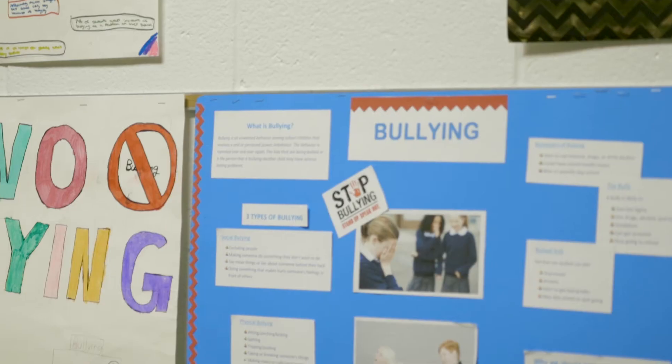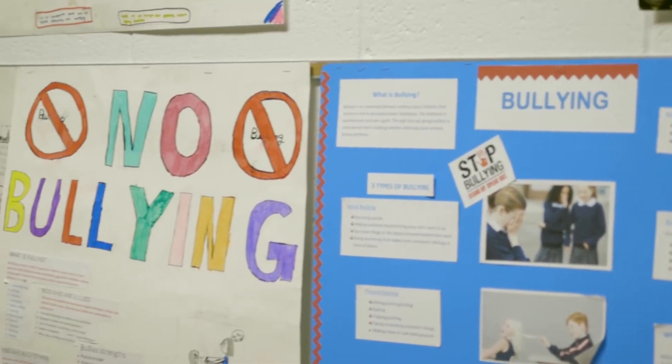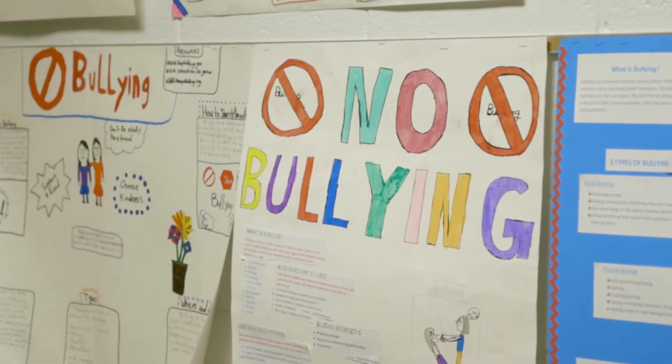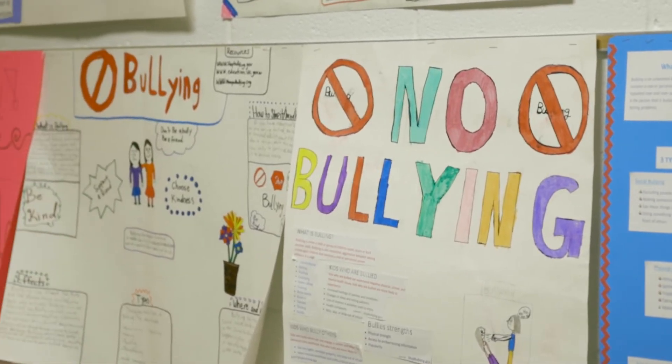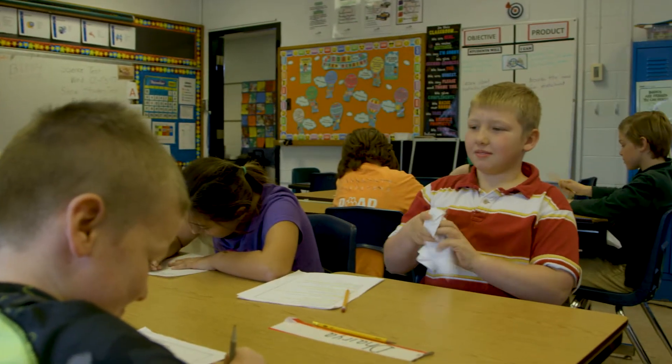Disrespectful behavior is intended as a hostile action, to show another person a willingness to belittle, mock, or reject their standing or worthiness. Often, disrespect is exhibited toward peers as a form of bullying. At other times, disrespect is directed at adults as a means of provoking a confrontation.